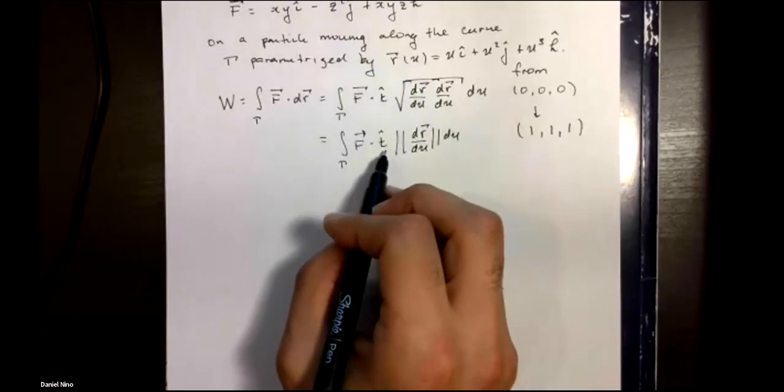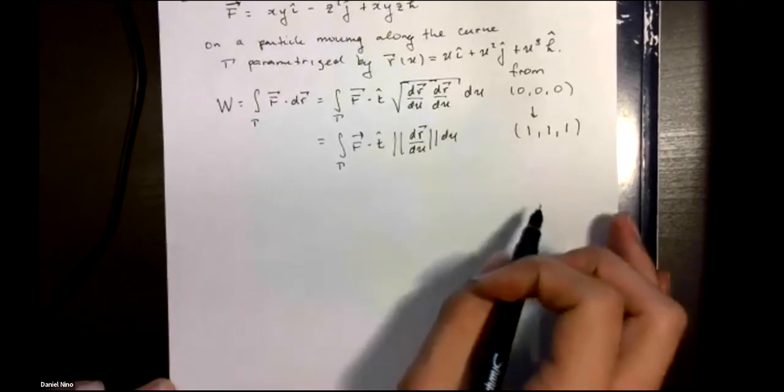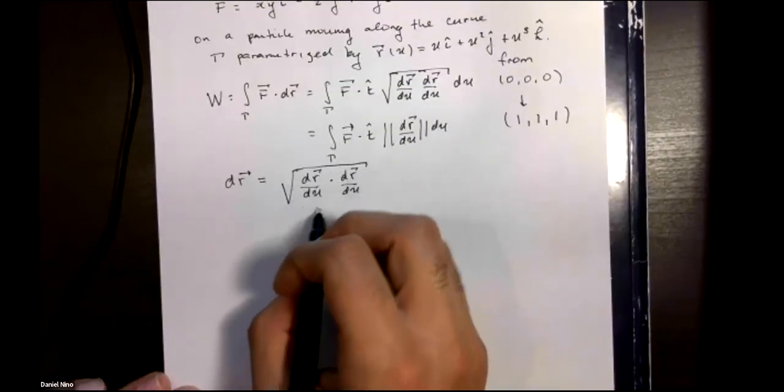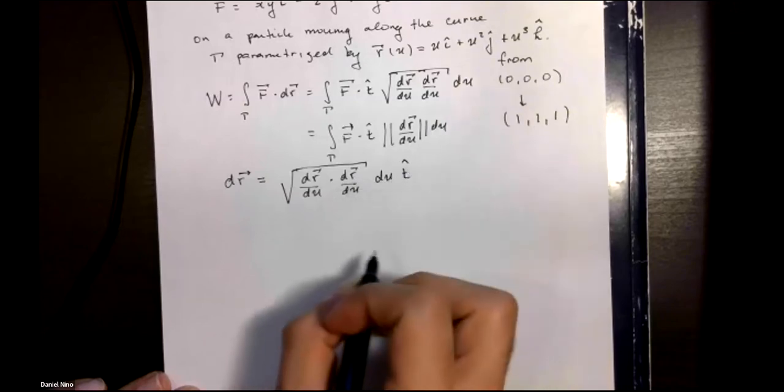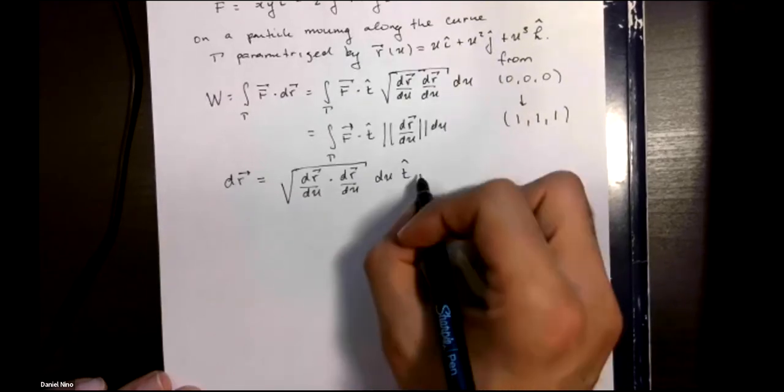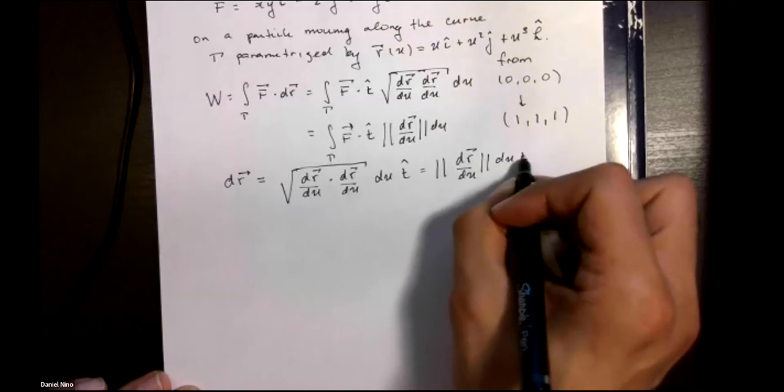Oftentimes this tangent vector is difficult to find, so we're going to backtrack to the norm of the derivative of R with respect to u times du times the tangent vector, or in other words writing it out like this.